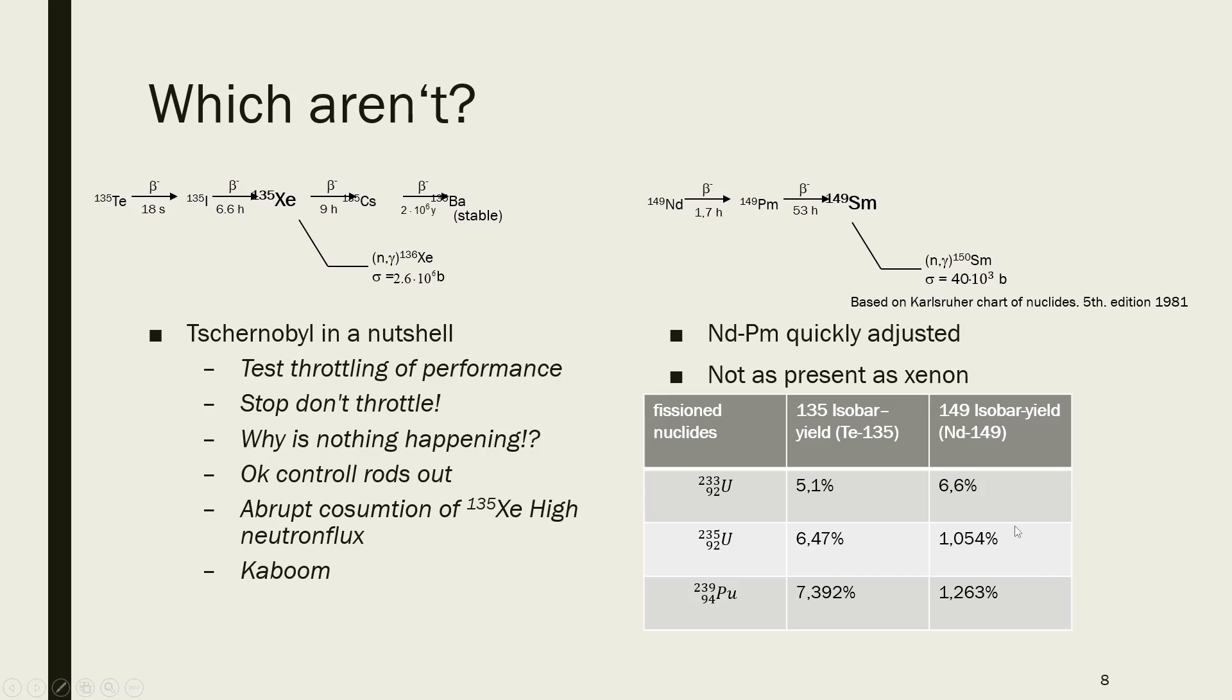And if you look at the decay chain, for example, starting at Tellurium-135, this is quite quickly adjusted. However, this takes quite a long time. If you have your Promethium-149, this has to have some time in order to decay to this Samarium neutron poison.